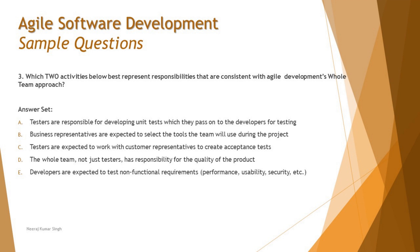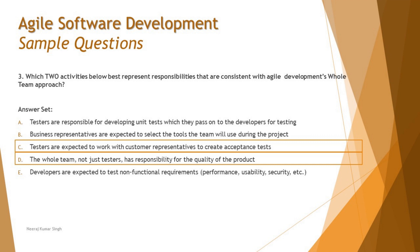Option D — 'The whole team, not just testers, has responsibility for the quality of the product' — is also correct. In Agile's whole team approach, quality ownership is shared across the entire team, not just test engineers. Option E — 'Developers are expected to test non-functional requirements' — is incorrect, as testing functional and non-functional attributes is generally the responsibility of the testing team. The correct answers are C and D.